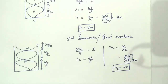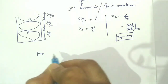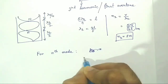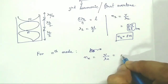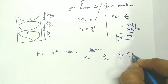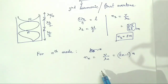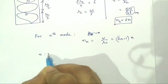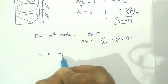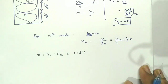We can see that in a closed organ pipe only the odd harmonics are present. Proceeding in the same way, for the Nth mode, N_N equals V by lambda N equals (2N minus 1) into N. This frequency is called the (2N minus 1)th harmonic or (N minus 1)th overtone. So from this derivation, N to N1 to N2 equals 1 to 3 to 5. We can see that in a closed organ pipe only the odd harmonics are present.